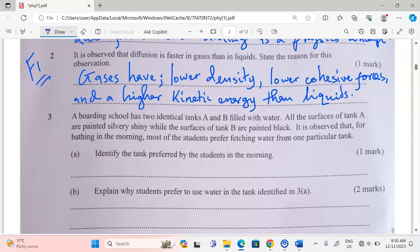A boarding school has two identical tanks, A and B, filled with water. All the surfaces of tank A are painted silvery shiny, while the surfaces of tank B are painted black. It is observed that for bathing in the morning, most of the students prefer fetching water from one particular tank. Identify the tank preferred by students in the morning. This is again from form one work, and this is heat transfer.